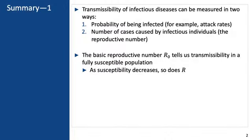transmissibility of infectious diseases can be measured in two ways: the probability of people being infected depending on their exposure type — and these are attack rates — or the number of cases caused by an infectious individual, and this is the reproductive number.